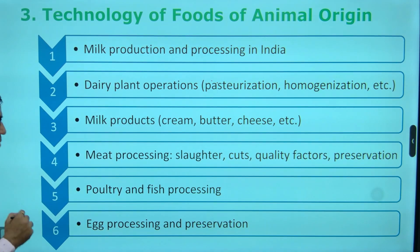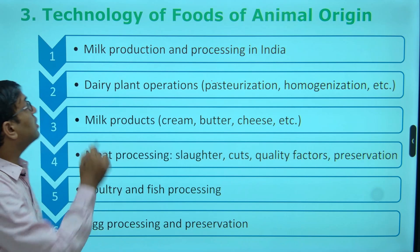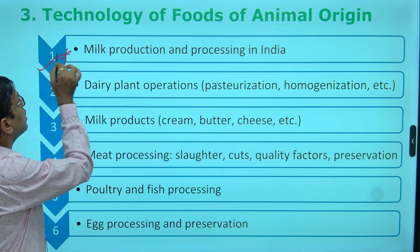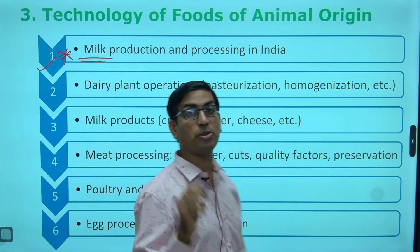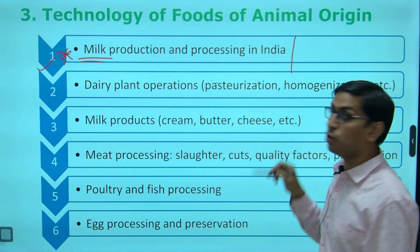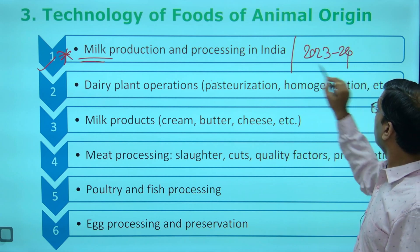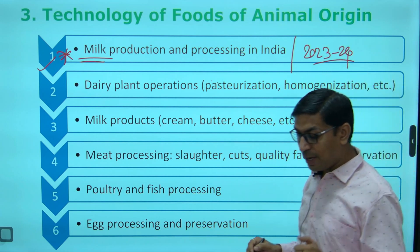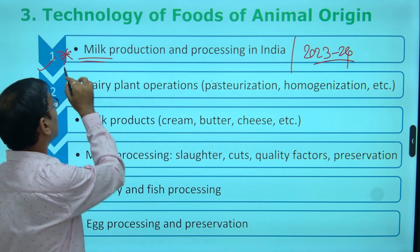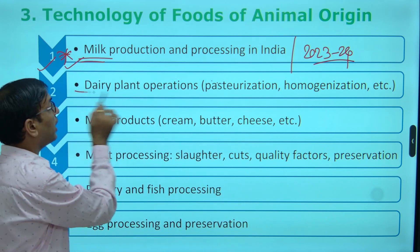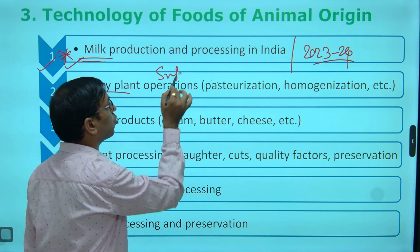Now, animal-based origin. The major focus is on milk production — not only production and processing area, but also what is the actual production area in 2023-24, per capita availability, per capita consumption, what are the trends — all things are there for milk. Even dairy plant operations, specifically given in the book of Sukumar Day.